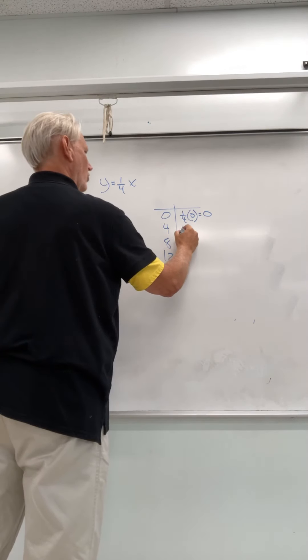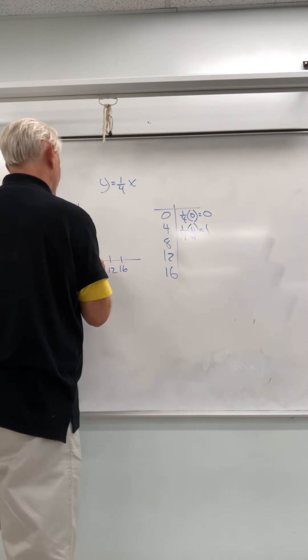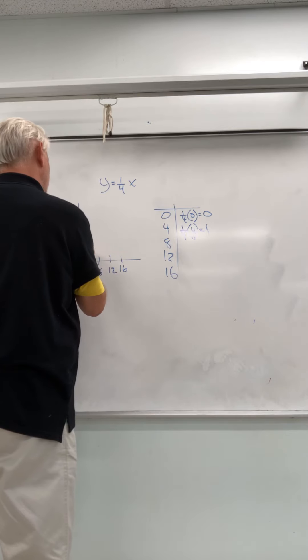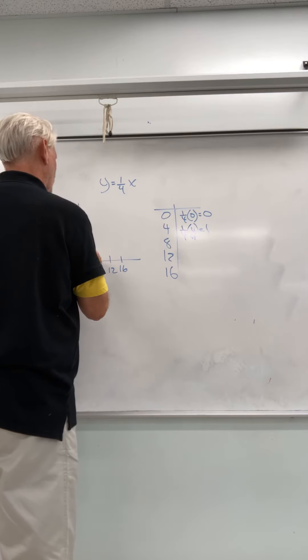Then we're going to do 1 fourth times 4. That's going to equal 1. So we're going to go over 4, and it's going to be 1, 2, 3, 4, 5. So over 4, up 1.